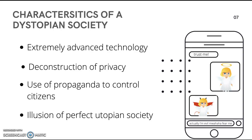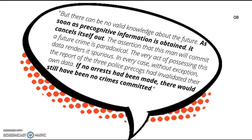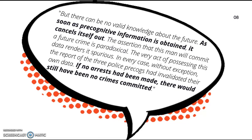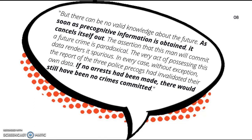The way the author illustrates the story makes it seem like a futuristic society, set supposedly in New York. Now, back to the topic of a dystopia disguised as a utopia: Kaplan, who is supposed to be the antagonist, says himself, 'As soon as precognitive information is obtained, it cancels itself out — if no arrests had been made, there would still have been no crimes committed.' Even though he is the antagonist, his words hold some truth. The pre-crime division was meant to stop crimes before they happen, but by trying to eliminate felonies, they have created detention camps full of individuals who have not actually carried out a crime.